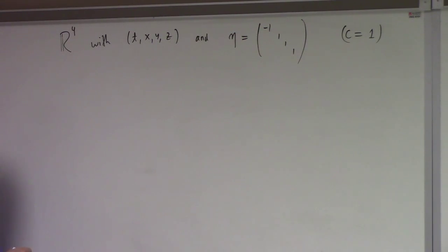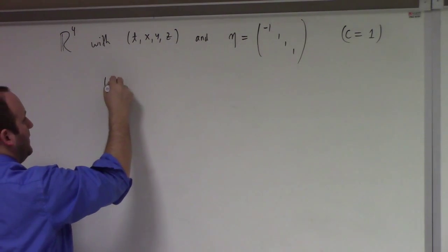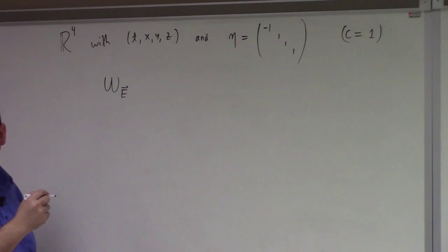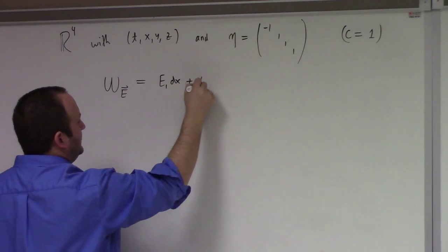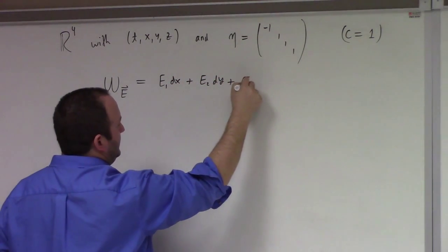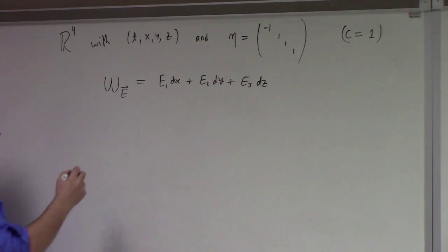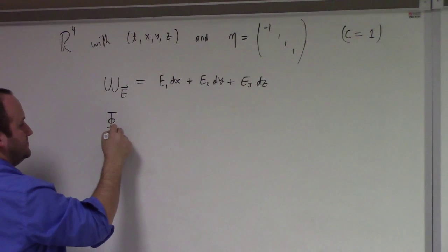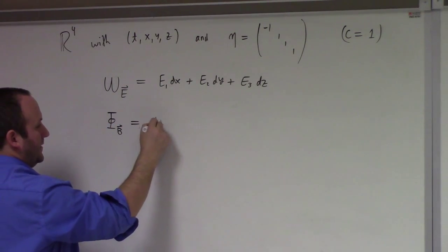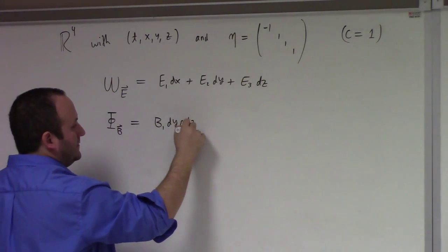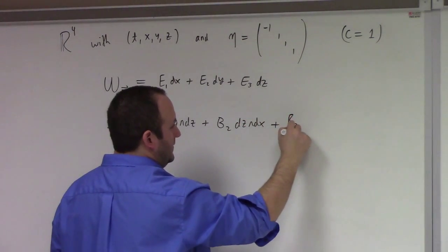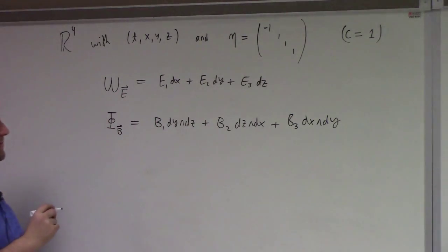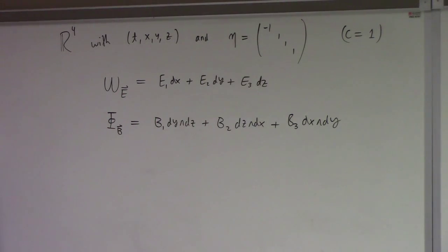You could look at the work form of the electric field. The work form of the electric field will just be E_1 dx plus E_2 dy plus E_3 dz. You can look at the flux form of the magnetic field, that will be B_1 dy wedge dz plus B_2 dz wedge dx plus B_3 dx wedge dy.